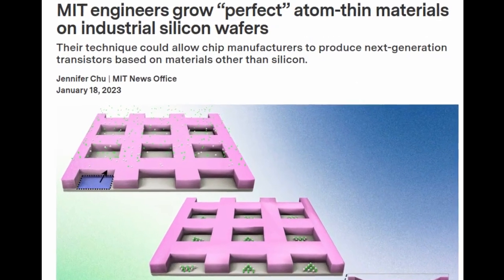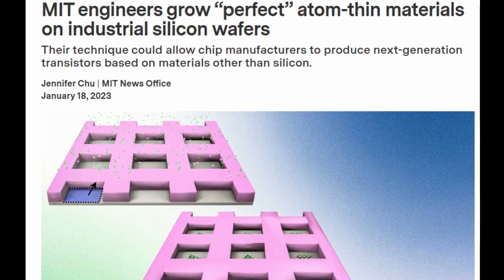True to Moore's law, the number of transistors on a microchip has doubled every year since the 1960s. But this trajectory is predicted to soon plateau because silicon, the backbone of modern transistors, loses its electrical properties once devices made from this material dip below a certain size.